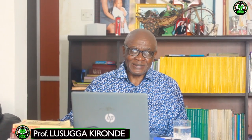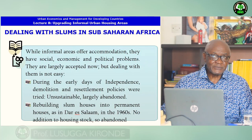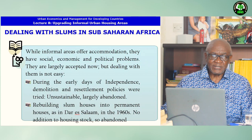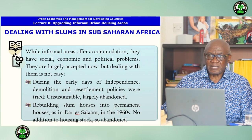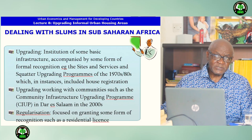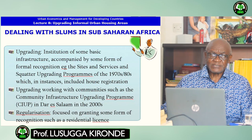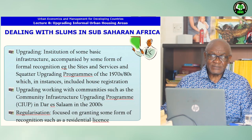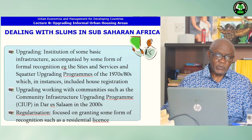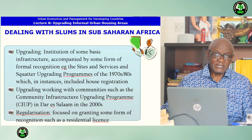How do we deal with slums in Sub-Saharan Africa? While informal areas offer accommodation, they have social, economic and political problems. They are largely accepted now, but dealing with them is not easy. During the early days of independence, demolition and resettlement policies were tried. These were found to be unsustainable and have largely been abandoned. Rebuilding slums into permanent houses was tried in Dar es Salaam, for example, in the 1960s, but this made no addition to the housing stock, so it was abandoned. Then there has been upgrading, which means institution of some basic infrastructure accompanied by some form of recognition — for example, the sites and services and squatter upgrading programs of the 1970s and 80s, which in instances included house registration. Upgrading has also included working with communities, such as the Community Infrastructure Upgrading Programme of Dar es Salaam in the 2000s. Regularization has focused on granting some form of recognition, such as a residential license.